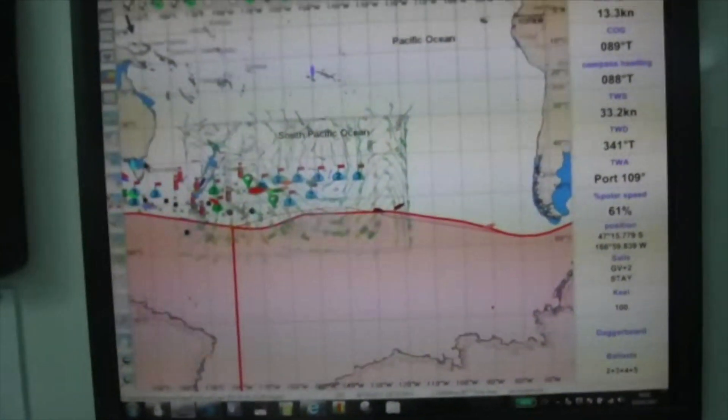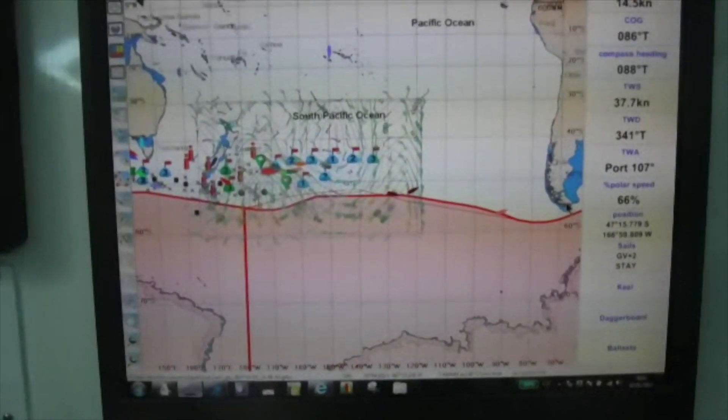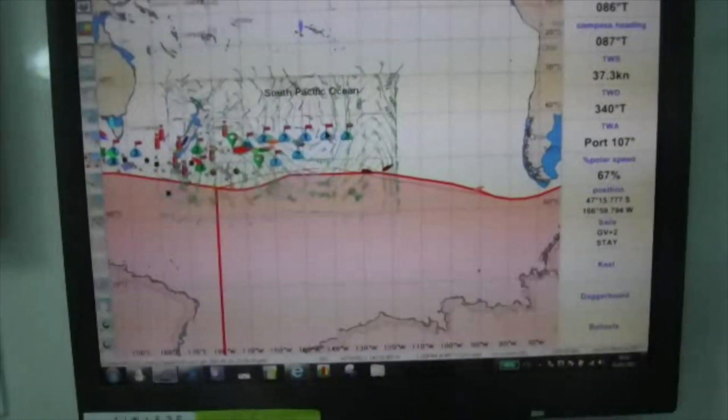So I'll turn the camera around here and aim it at the screen. Here's the Pacific, Australia, New Zealand, Chile and Cape Horn. That's our goal over there. This is where we have a weather chart for.